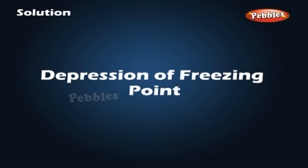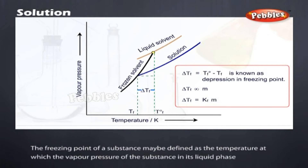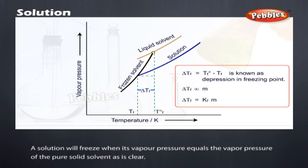Depression of freezing point: The freezing point of a substance may be defined as the temperature at which the vapor pressure of the substance in its liquid phase equals the vapor pressure of the pure solid solvent. A solution will freeze when its vapor pressure equals the vapor pressure of the pure solid solvent.